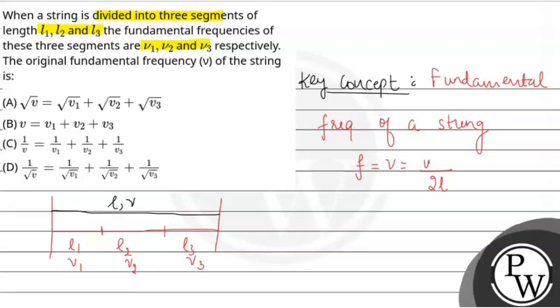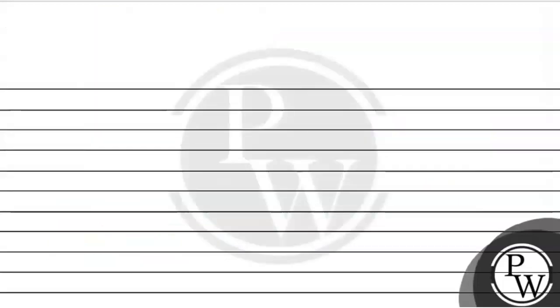So let this be ν. We know that F equals V over 2L, and here ν equals V over 2L. This is for the original string.